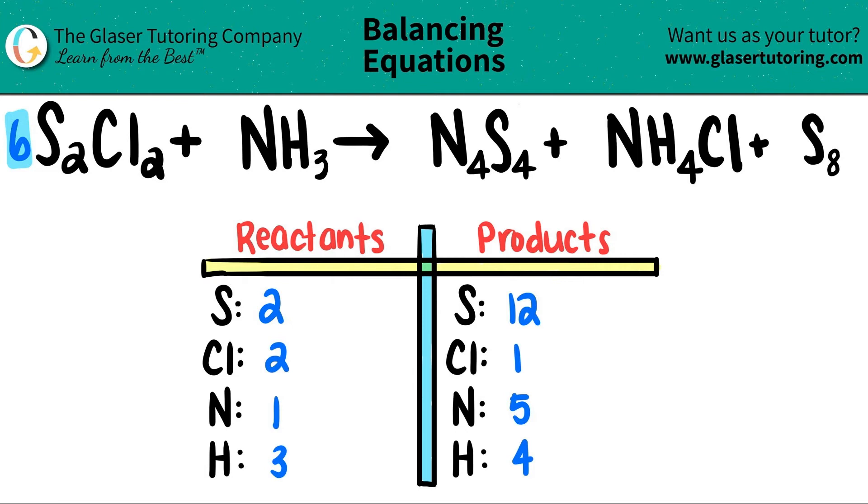So I'm going to put a six here, but you have to be fair. You have to distribute the six between the sulfur and the chlorine. So I now have six times two, I have 12 sulfurs. That's what I wanted. And now I have six times two, I have six chlorine. Sorry, six times two is 12. So now I have 12 chlorine. Let's keep going down the list. The sulfurs are balanced, so that's all good.